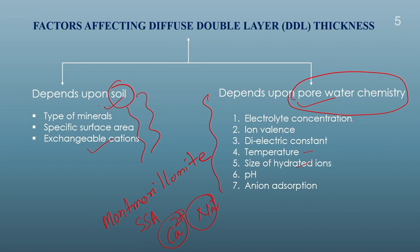Regarding pore water chemistry: if concentration is higher, more counter ions are present, and the diffuse double layer thickness will be less. Similarly, if the ion valency is higher, ions are more strongly attracted to the clay surface and the diffuse double layer thickness decreases. Dielectric constant, temperature, size of hydrated ions, pH, and anion adsorption also all contribute to controlling the diffuse double layer thickness of a clay-water system.